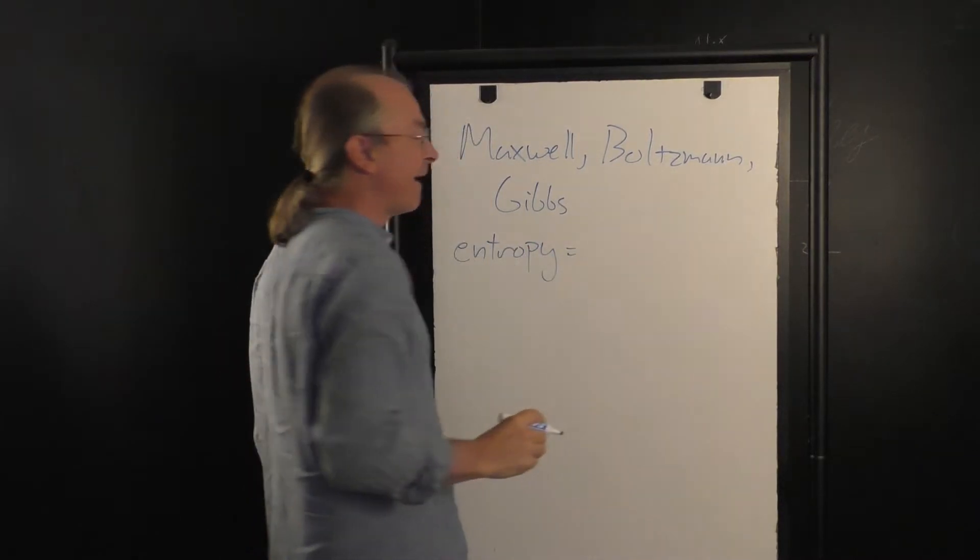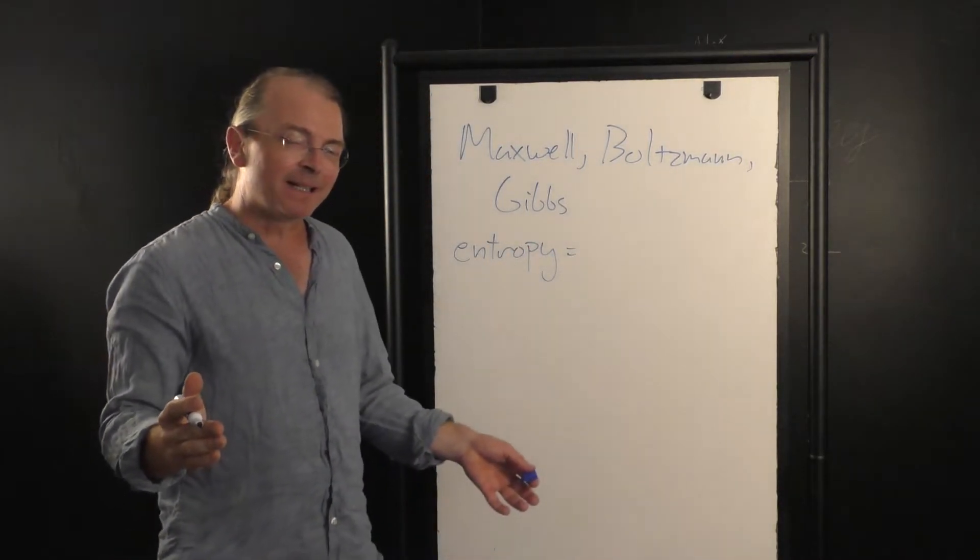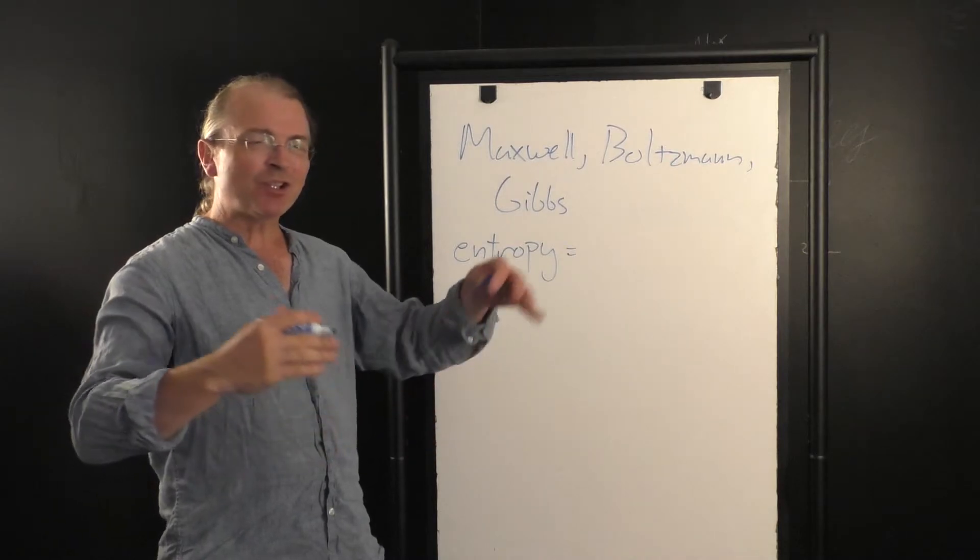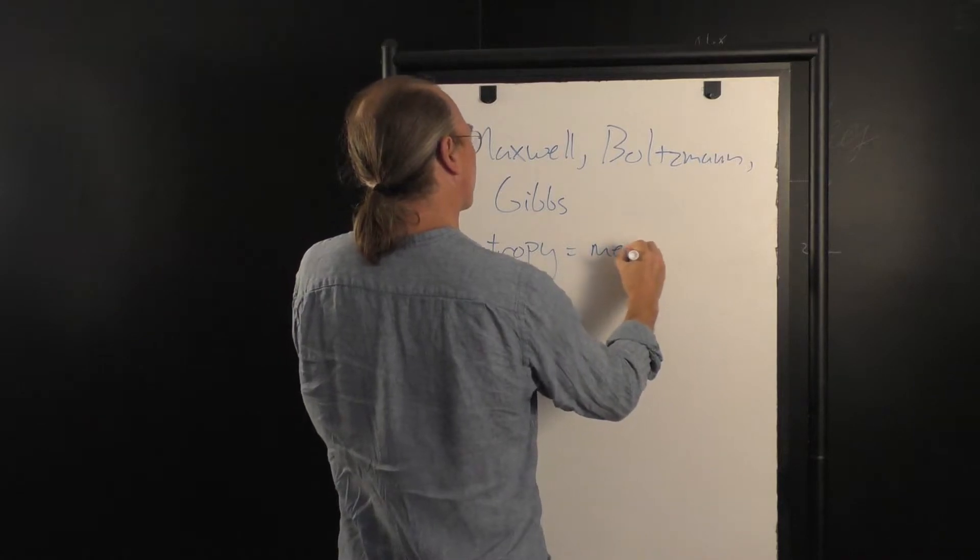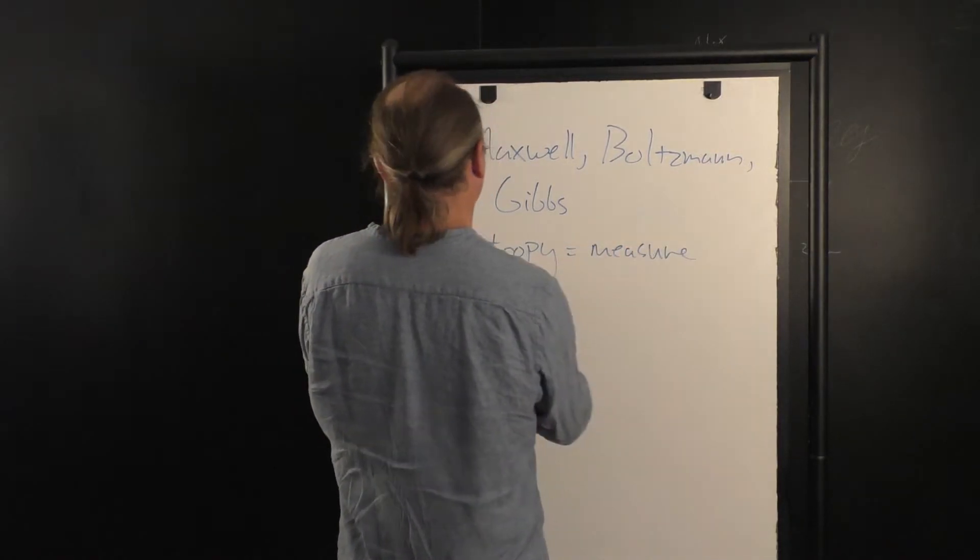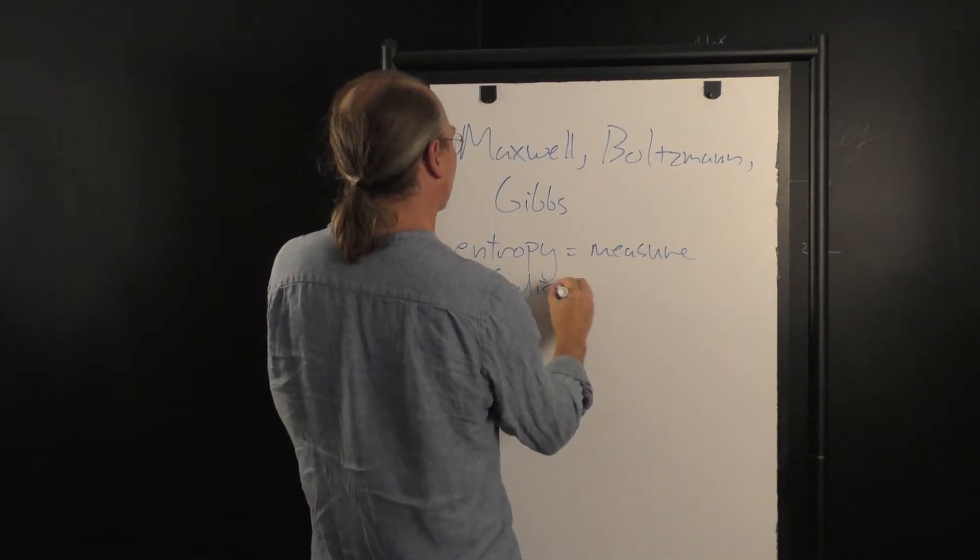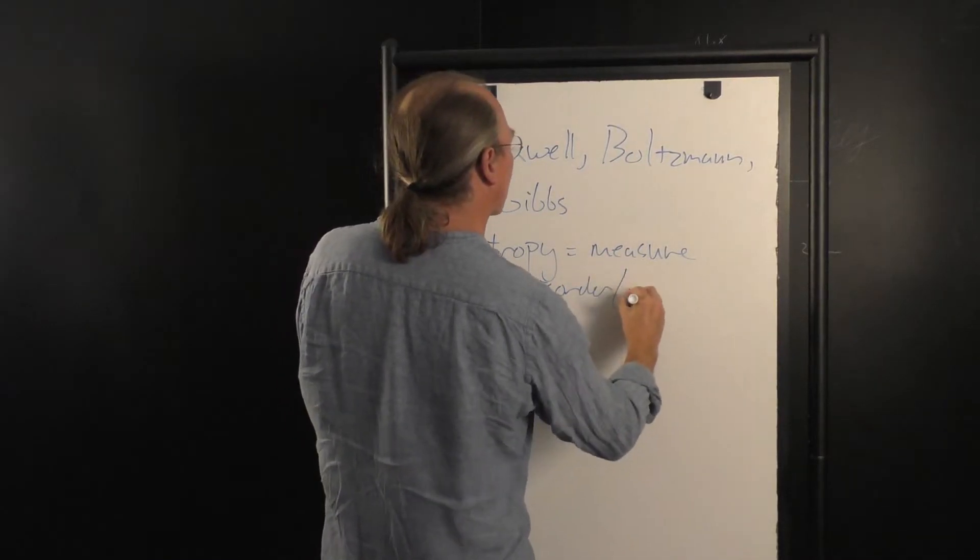Entropy. Entropy. Now, what is entropy? Entropy is something that messes up your ability to do work. It's some measure of disorder or of randomness.